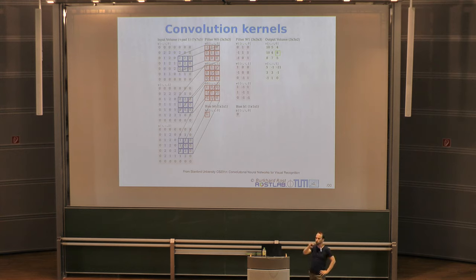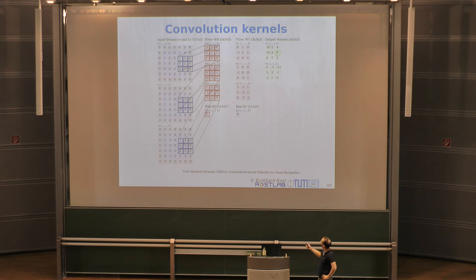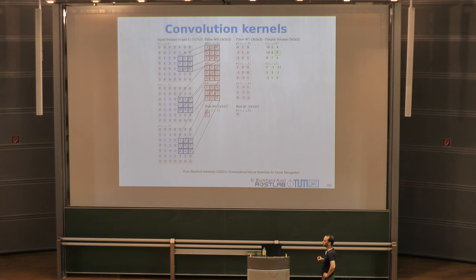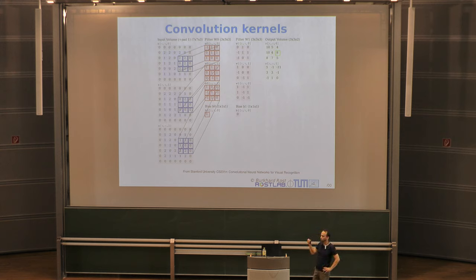Oftentimes we see a stride of one so we take every possible position, but a stride of two can model downsampling. One very important property: the convolution kernel always stretches the full depth dimension — it moves across width and height but always takes the full depth into account, having weights for all feature channels. These weights are always the same regardless of position, making the kernel translation invariant: wherever an object is in the image, we want to detect it.